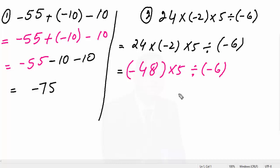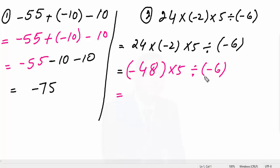We are applying the DMAS rule here. In DMAS, what comes first? Division. After that we have multiplication, addition, subtraction. Here you can see we need to multiply minus 48 by 5, and then divide. So multiply 5 by 48: 5 eights are 40, carry 4.